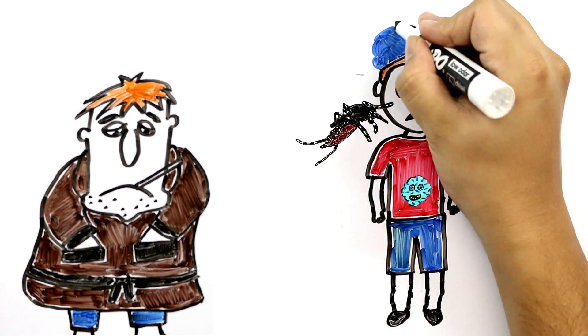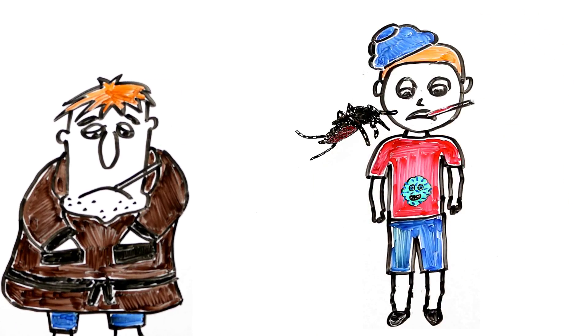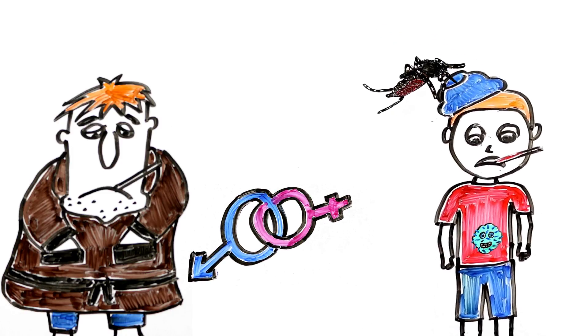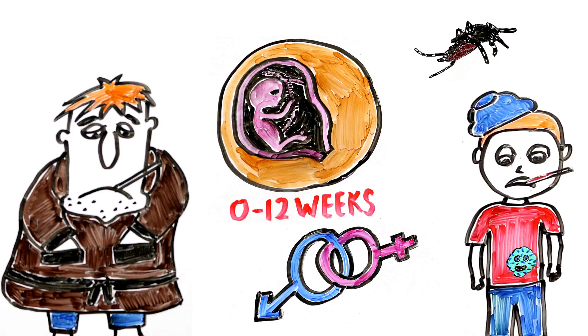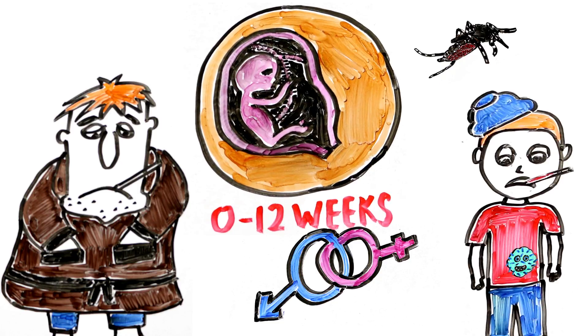But mosquitoes aren't the only way to get the virus. People infected with Zika can pass on the virus to others through sexual intercourse. Zika can also be transmitted through blood and mother-to-fetus transmission has been documented throughout pregnancy. In 2015, Zika virus RNA was detected in the amniotic fluid of two fetuses, indicating that it had crossed the placenta.